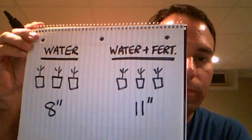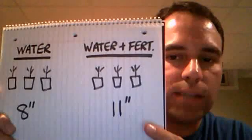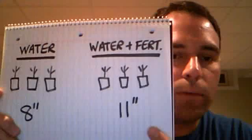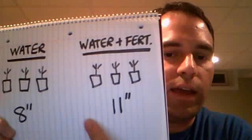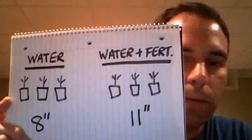We run both the control and experimental groups for the same amount of time, then measure the height of the plants — that's our dependent variable, our data. We want numbers, heights of plants, and then we average them. In this case, plants in the control group grow to an average of 8 inches tall, and the experimental group with fertilizer grows to an average of 11 inches. Those results are our dependent variable — it depends on what happened in the experiment.